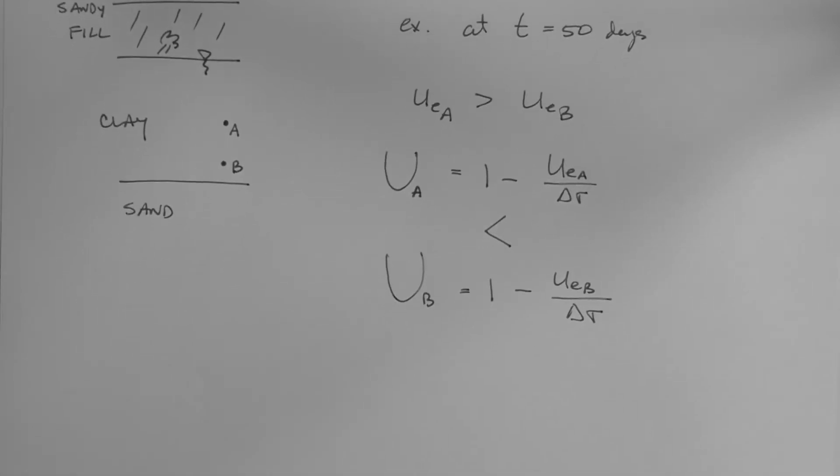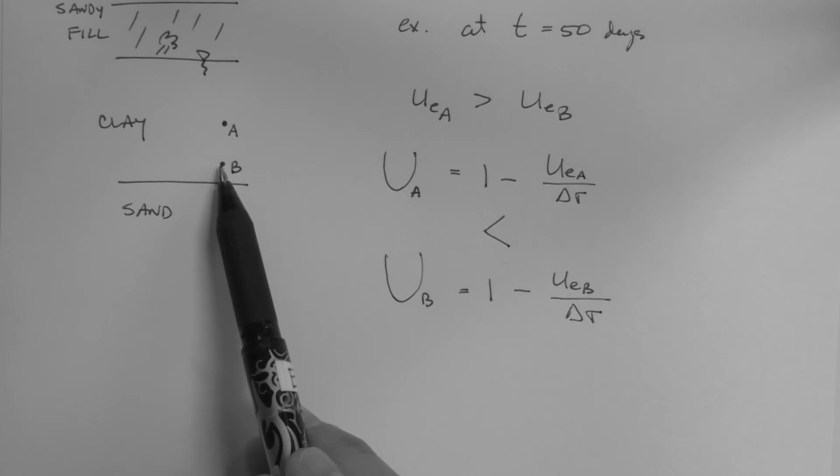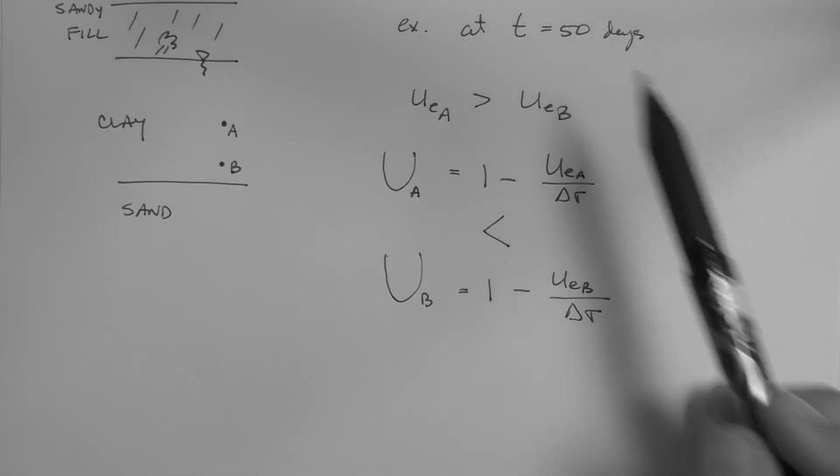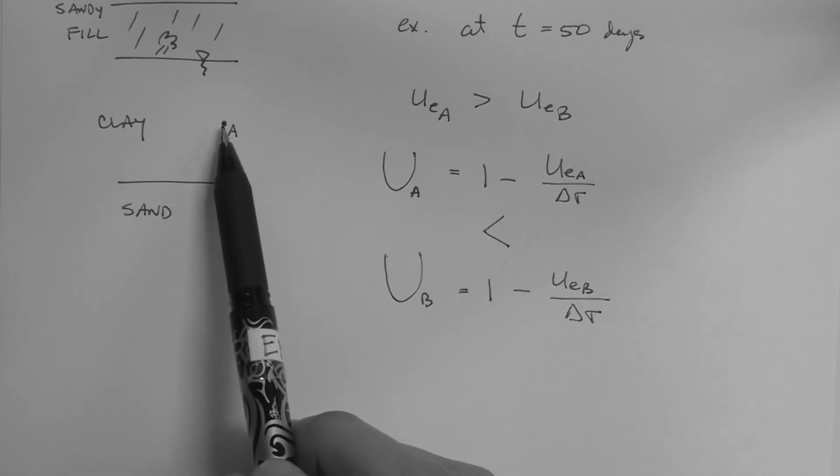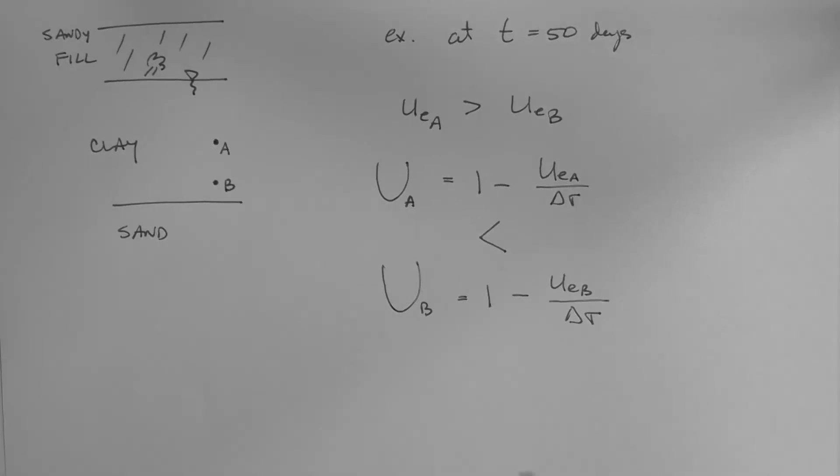Clearly this means that the soil at point B at this time has consolidated more than the soil at point A. So what we recognize with this is that at any given time the degree of consolidation at a given point is different than the degree of consolidation at the next point.